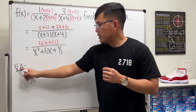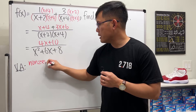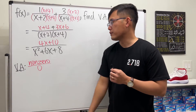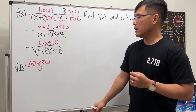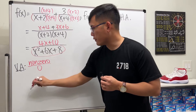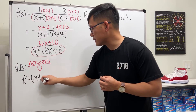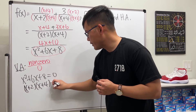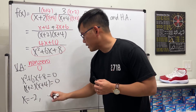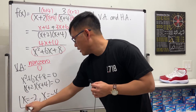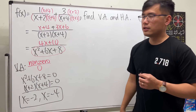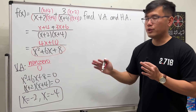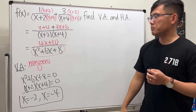Remember, for the vertical asymptotes, it's the case of a non-zero on the top over zero on the bottom. When you have zero over zero, sometimes you get a hole, so be really careful with that. So we just need the bottom to be zero: x²+6x+8 = 0. Using the factored form, (x+2)(x+4) = 0, so x = -2 and x = -4. These are the vertical asymptotes.